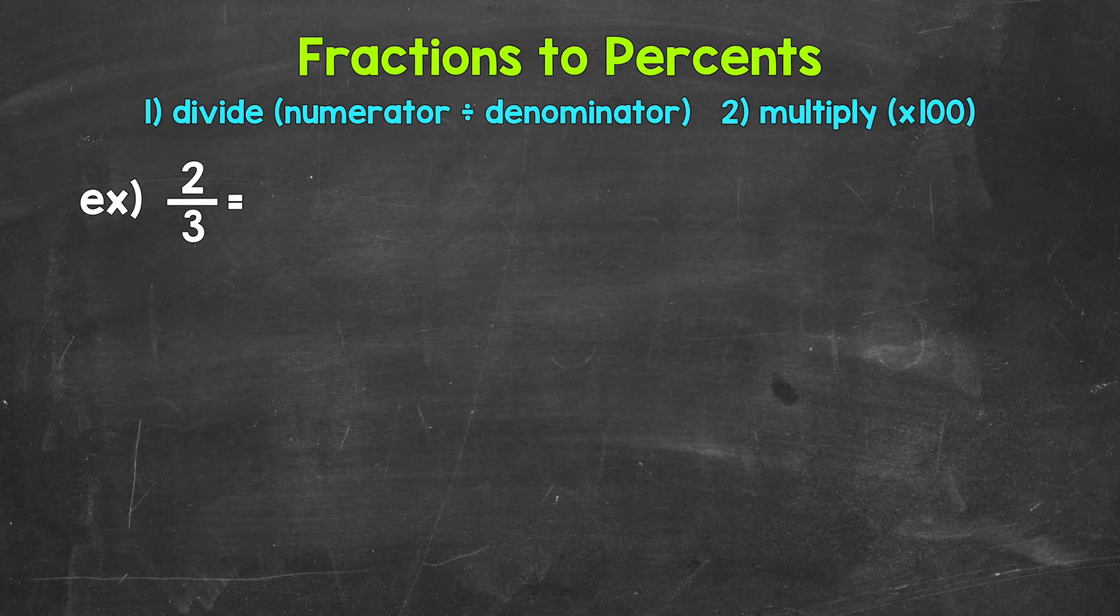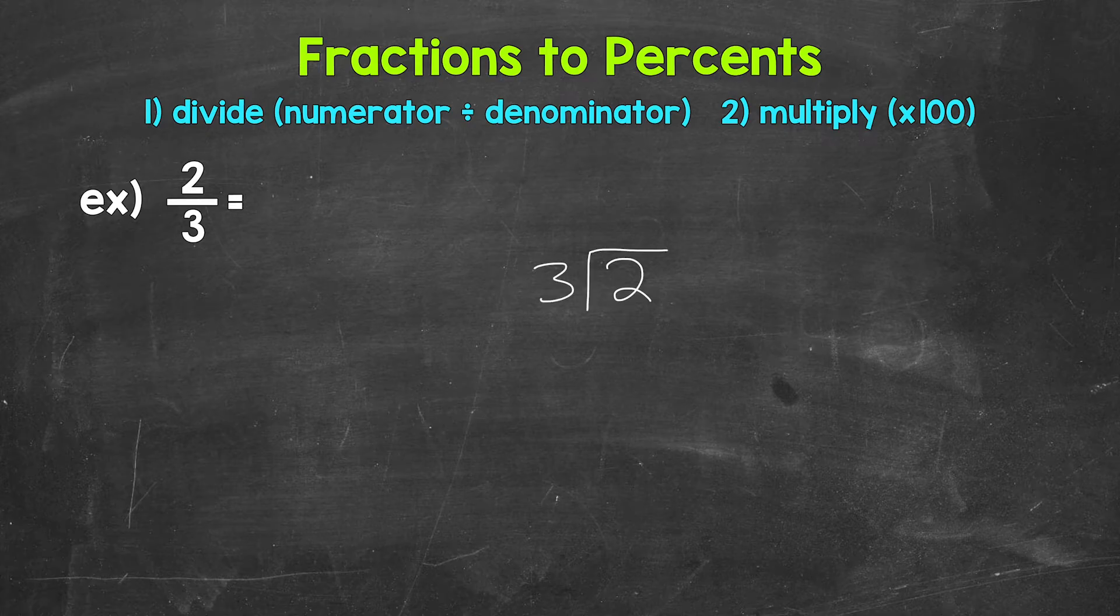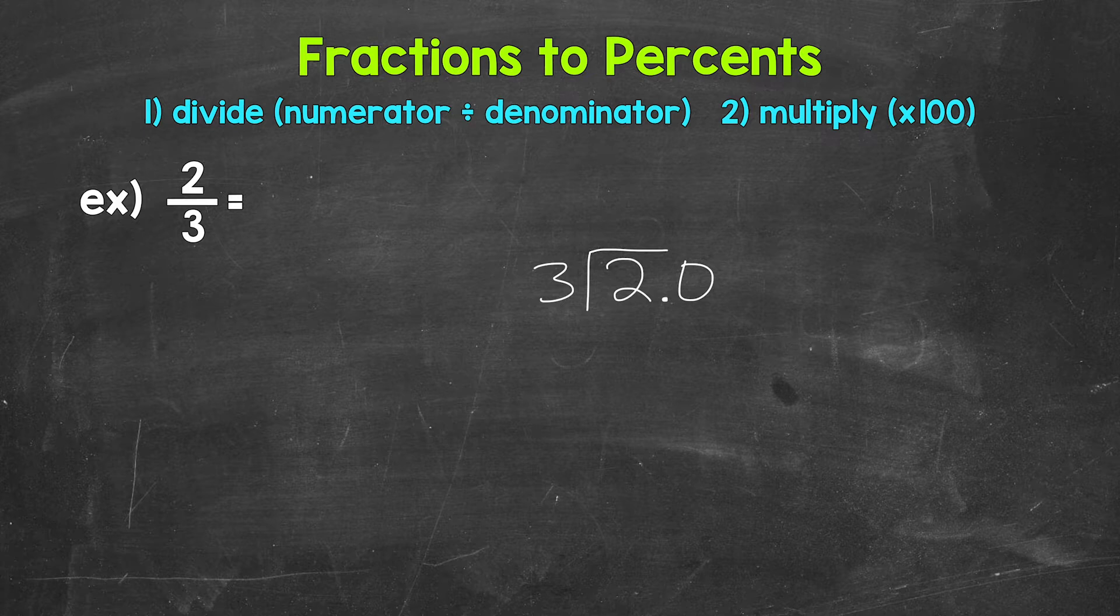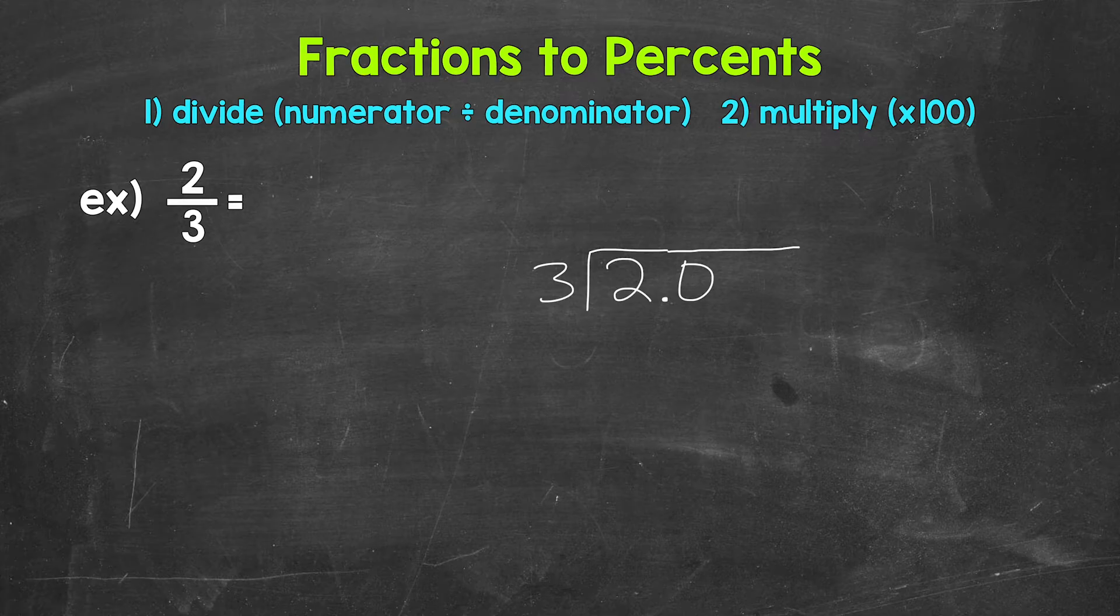So for two thirds, we can set this up as two divided by three. Then we go through the division process. How many whole groups of three in two? Well, we can't do that. So we need a decimal and a zero in order to work through this. Once we have the decimal and the zero, we bring the decimal straight up into where the quotient will be.